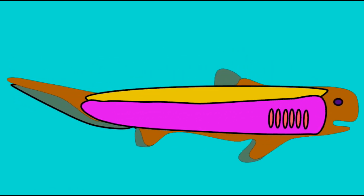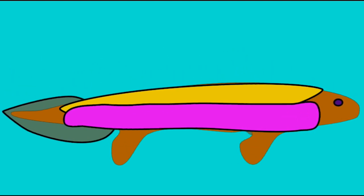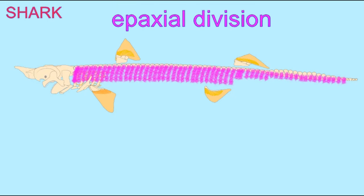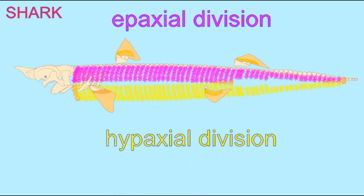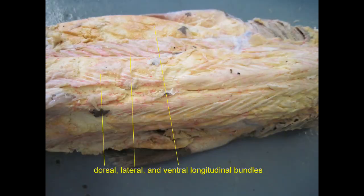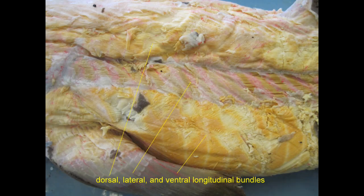By the jawed vertebrates, such as this shark, these myotomes were then divided into a dorsal or epaxial division and a ventral or hypaxial division.